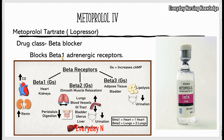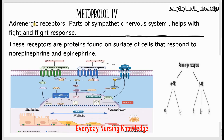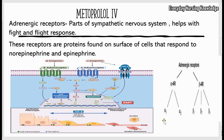Being a beta blocker means it blocks beta-1 adrenergic receptors. Adrenergic receptors are parts of the sympathetic nervous system which helps with the fight-or-flight response. These receptors are proteins and they are found on the surface of the cells, and they respond to epinephrine and norepinephrine.